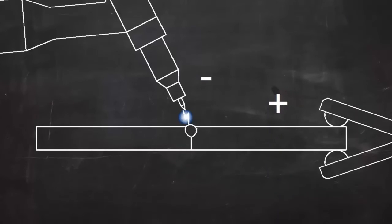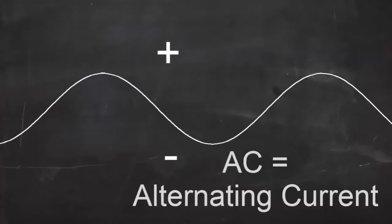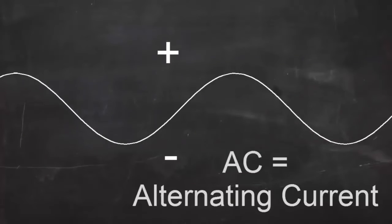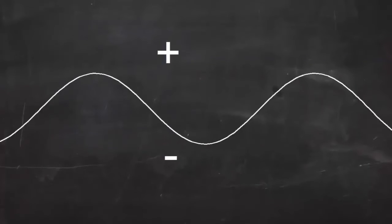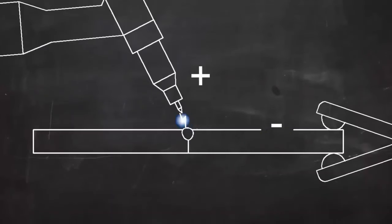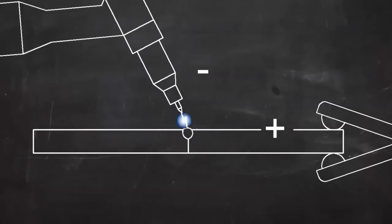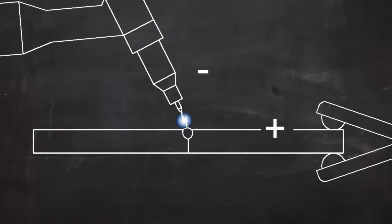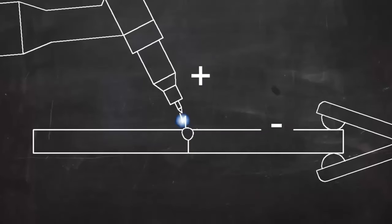When welding aluminum, however, AC is used. In AC, the positive and negative voltages switch back and forth between the electrode and the workpiece. This puts more heat on the electrode, but it has a cleaning effect on the workpiece. Aluminum forms oxides that float to the top of the weld pool and prevent a good weld, and AC current helps control these oxides.